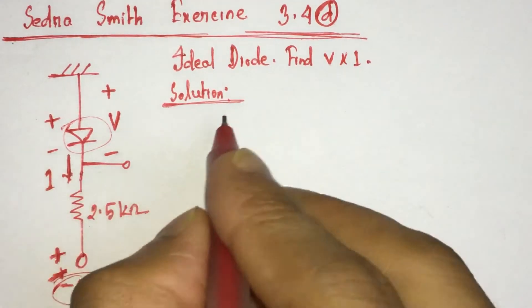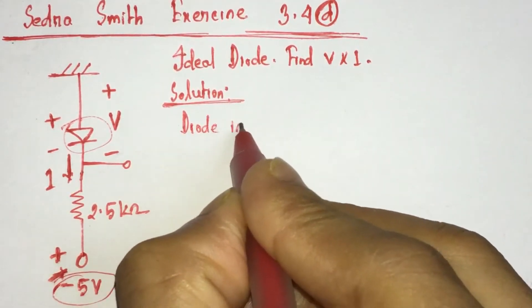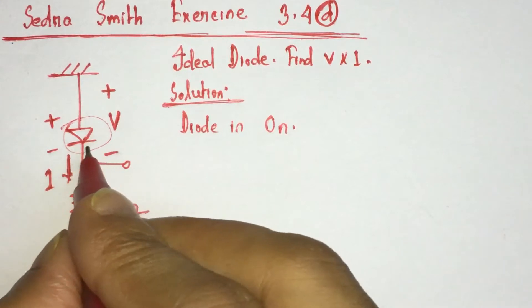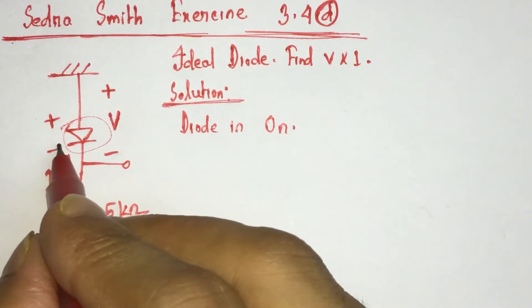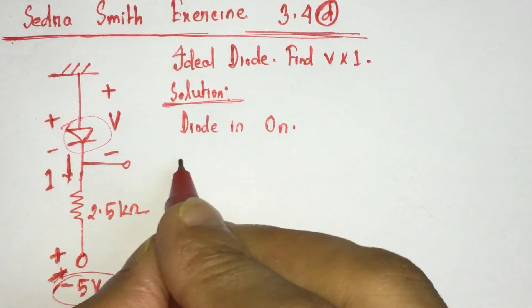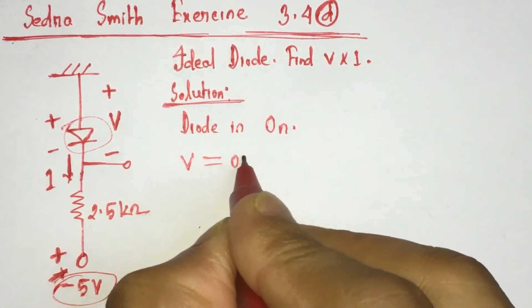That is, diode is ON. Since the diode is ON and this is an ideal diode, the voltage across the diode is 0. That is V equals 0 volt.